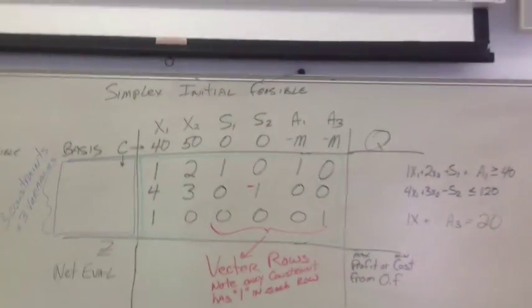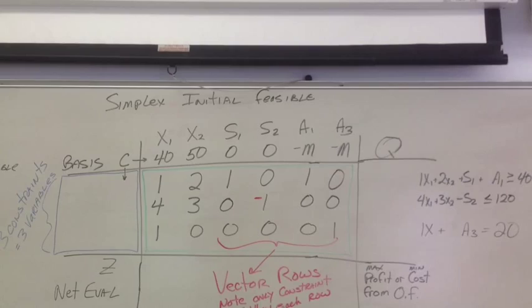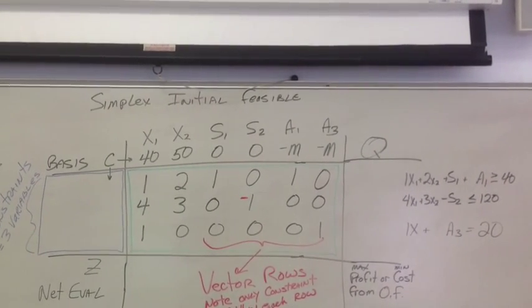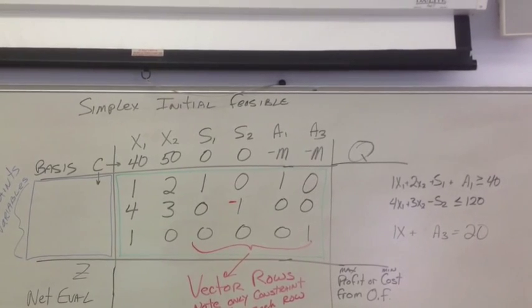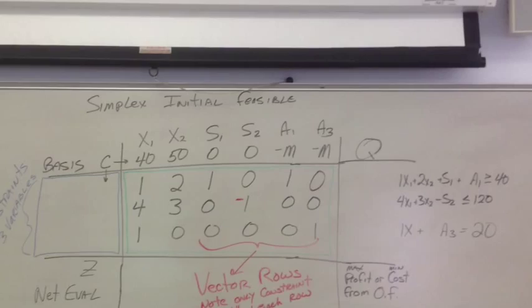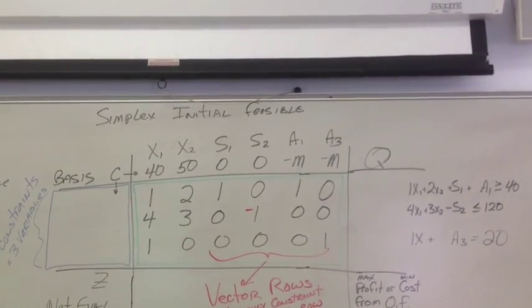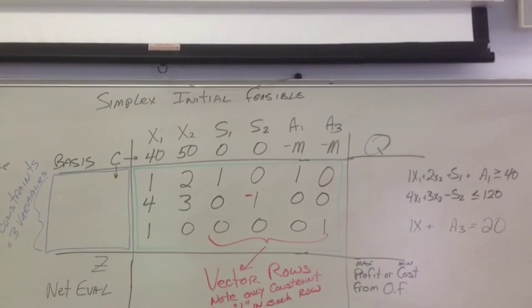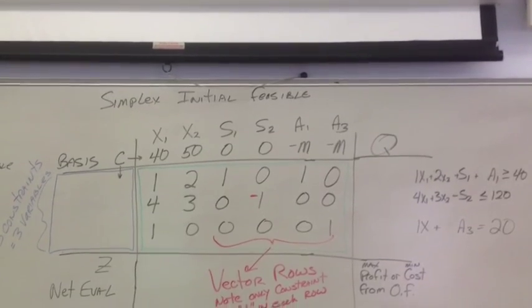Alright, notice across the top, I've just put in the objective function, 40x1 plus 50x2 plus 0s1 plus 0s2 minus ma1 minus ma3. That was just our objective function in standard form. I've kind of stacked the variable on top of the coefficient because the C stands for coefficient and it just makes it more logical when we put them into the basis.